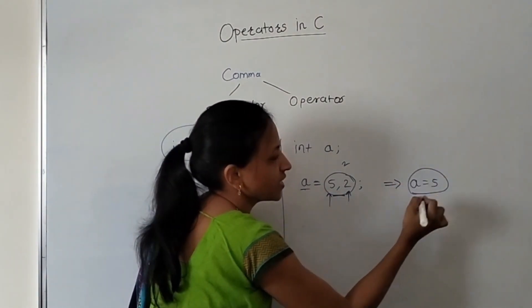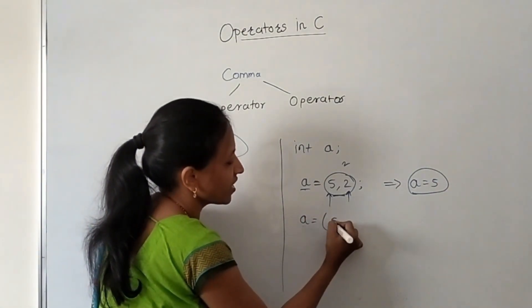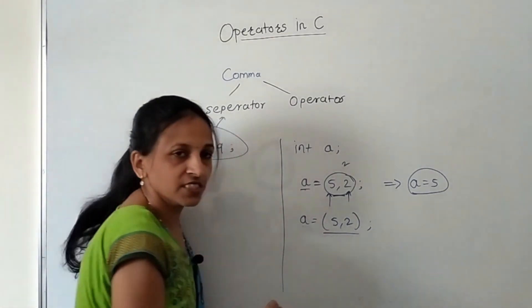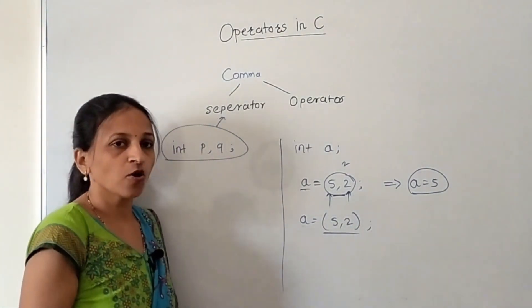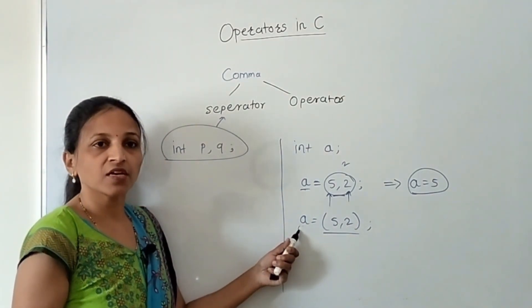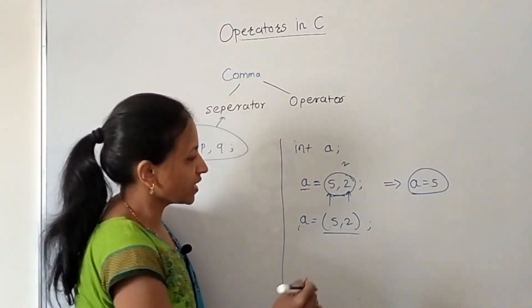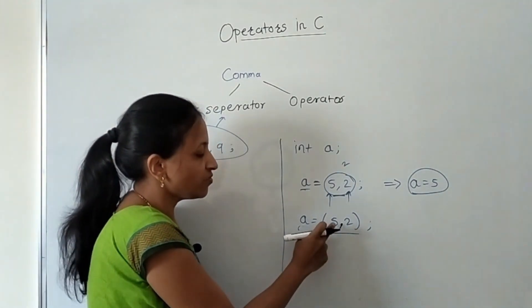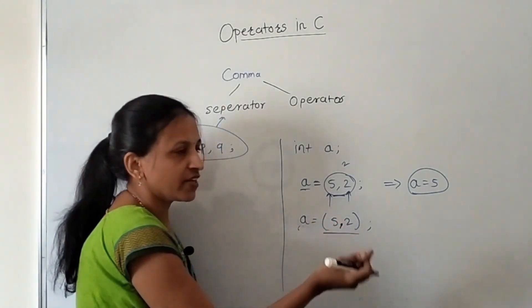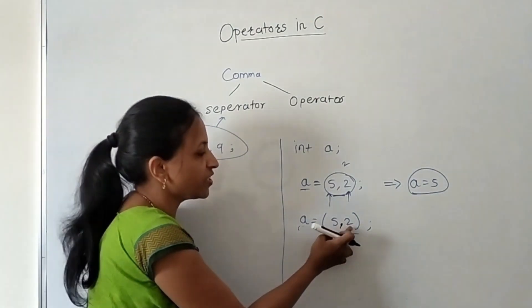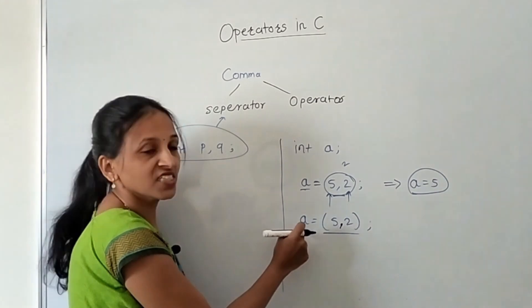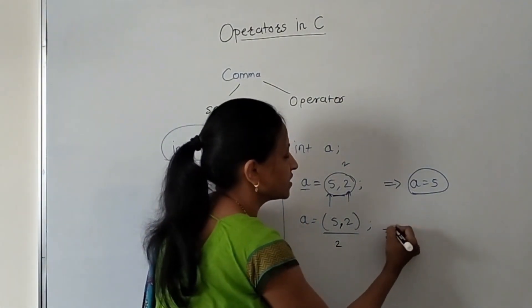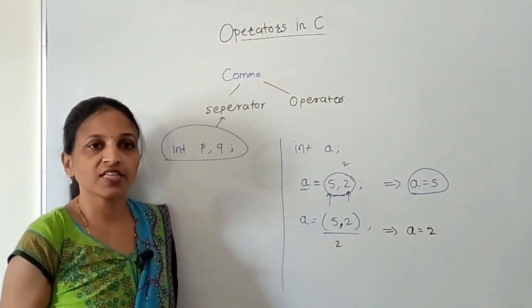But if you place brackets: 'a = (5, 2)', the parenthesis has higher priority than '=', so the comma expression is resolved first. The comma operator discards the left operand 5, returns the right operand 2, and that value gets stored in a. So after execution, a equals 2.